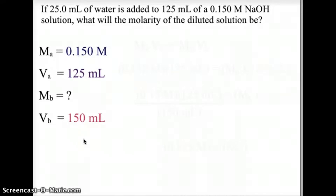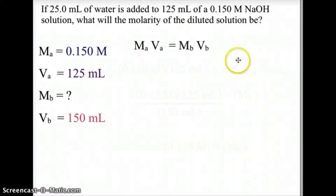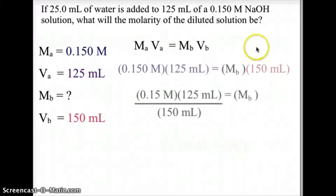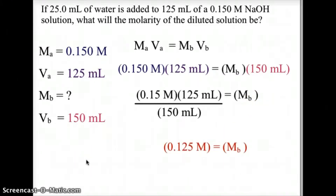Our secondary molarity, or the molarity of the diluted solution, is what we are looking for. And we are going to have a final volume of 150 milliliters because we're adding the 25 milliliters to the 125 milliliters, making a total solution of 150 milliliters. Using the equation MAVA equals MBVB, we can plug in our values and solve algebraically. So 0.15 molar times 125 milliliters divided by 150 milliliters will isolate the molarity value, and that comes out to be 0.125 molar.